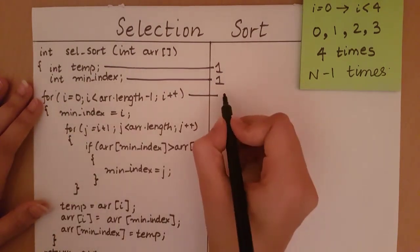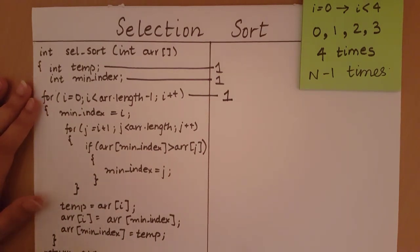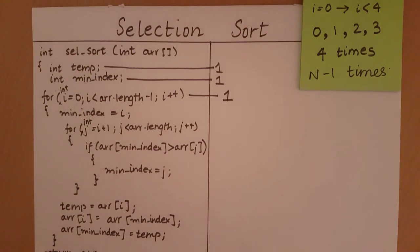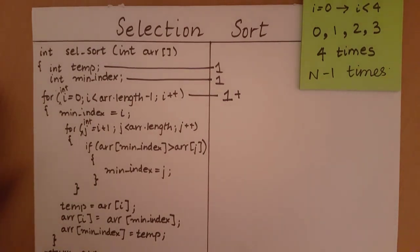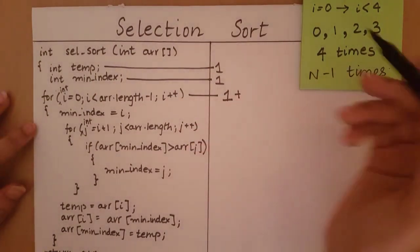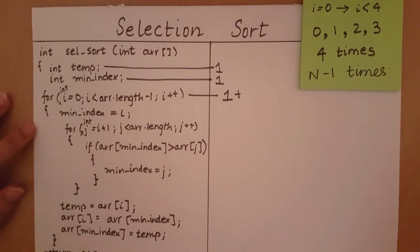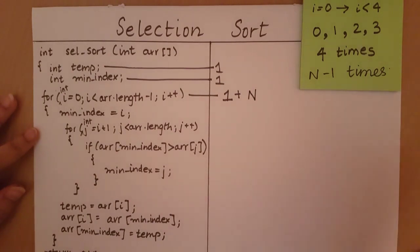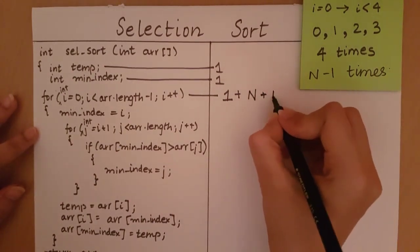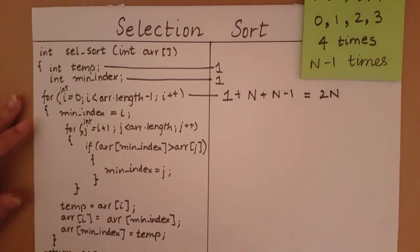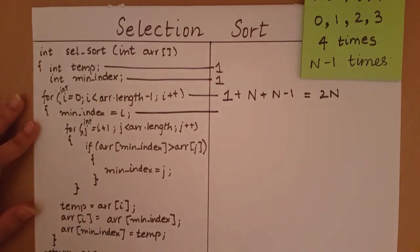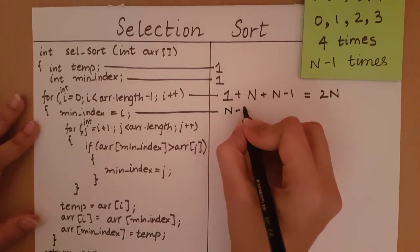The initialization takes just one primitive operation. Now we come to the condition: the condition will always take one more than the number of times the loop is executing, because it's satisfied the first n minus 1 times and then one extra time it's not satisfied and we come out of the loop. So that's n minus 1 plus 1, which is n. The increment occurs as many times as the loop executes, so that's n minus 1, giving us 2n total. The minIndex statement on its own takes one primitive operation but happens n minus 1 times.